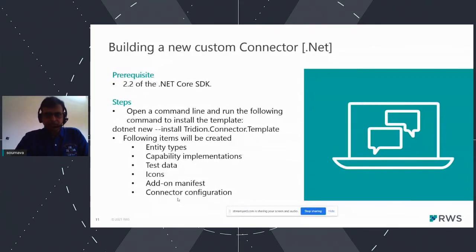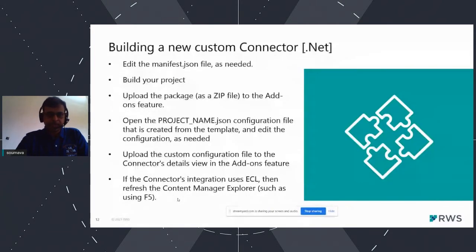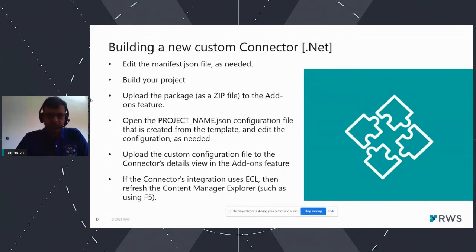Once the code is extended from the default connector framework code, you need to build the project. After the build, you will have a ZIP file as a package and a JSON file. The ZIP file can be uploaded to the Add-On Service, and the project-name.json can be uploaded as the configuration file. Once everything is successful, the developer or customer can refresh their CMS — if it is an ECL-related connector integration, the CMS will start showing that connector as a separate node below the category keyword node.